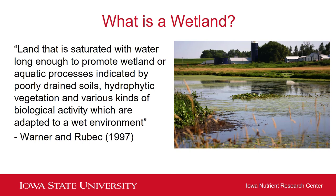I'm going to be talking about wetlands. What exactly is a wetland? A wetland is land that is saturated with water long enough to promote wetland or aquatic processes indicated by poorly drained soils, hydrophytic vegetation, and various kinds of biological activity which are adapted to a wet environment. There are a number of different wetland definitions, but they all tend to include three main things: water, poorly drained soils, and hydrophytic vegetation.